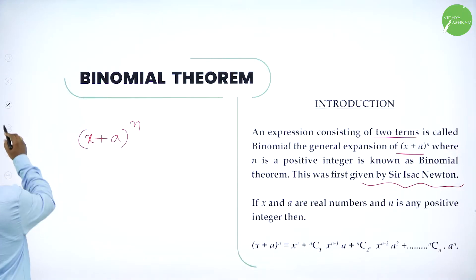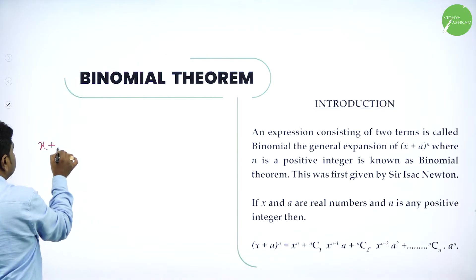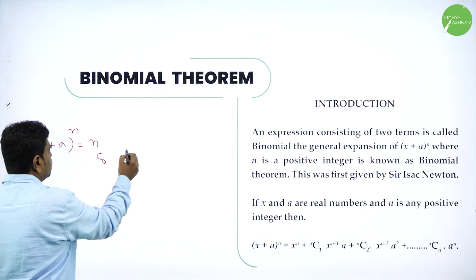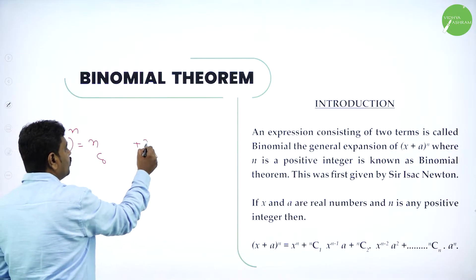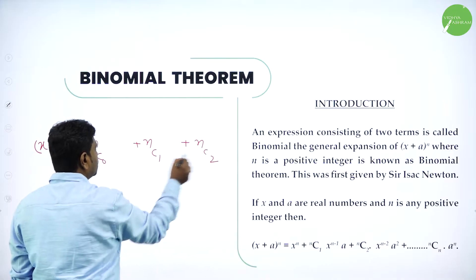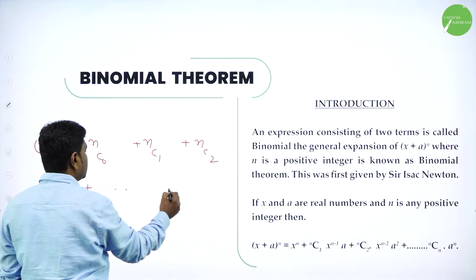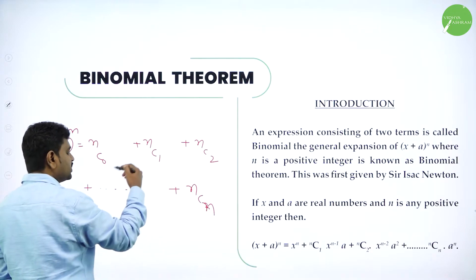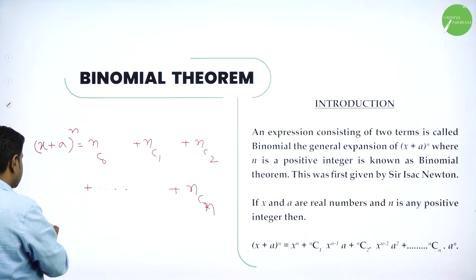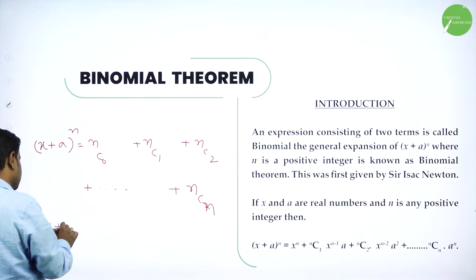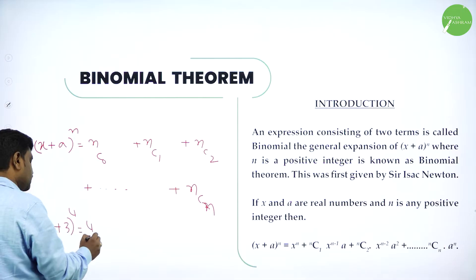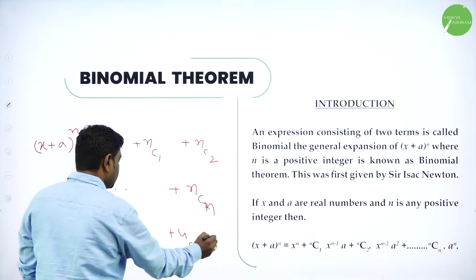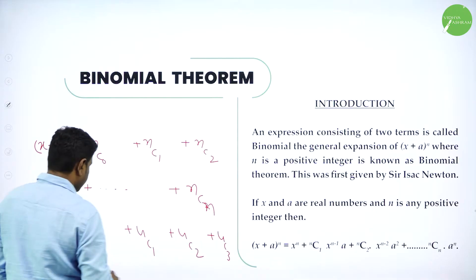The expansion is interesting — observe this carefully. For x plus a power n, we start with nC0, then nC1, then nC2, and so on till we stop at nCn. For example, if you have x plus 3 whole power 4, start with 4C0, then 4C1, then 4C2, then 4C3, then 4C4.